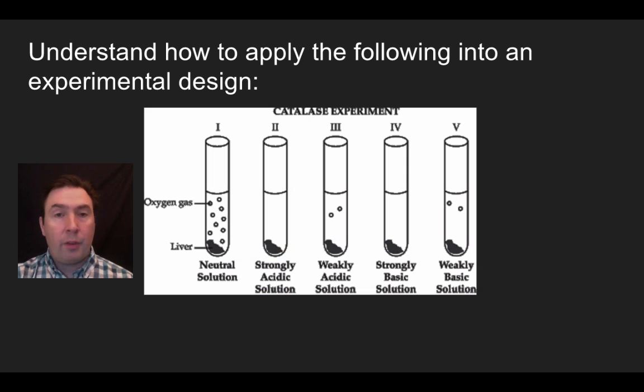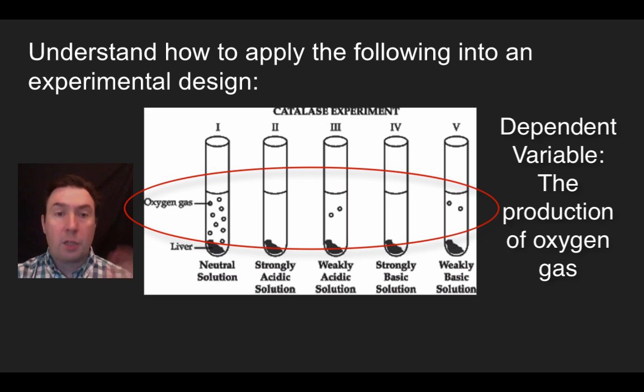And the dependent variable, the thing that happens based off of the changing of those conditions is going to be the production of oxygen gas, where I have a lot of oxygen gas being given off in the neutral solution, no oxygen gas being given off in the strongly acidic and strongly basic, and then small amounts of gas in the weakly acidic and weakly basic solution.